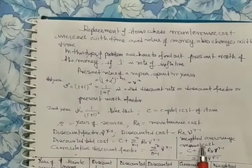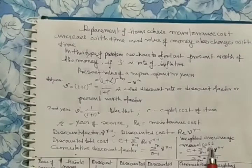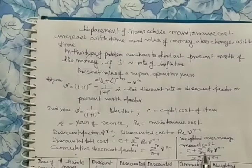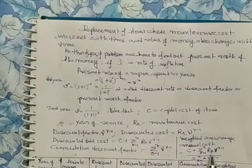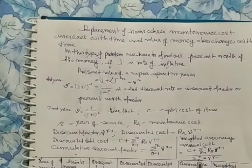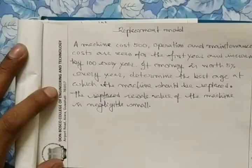We have to find out the weighted average annual cost. It is C plus summation from r=1 to n of (R_r × v^(r-1)), divided by the summation from r=1 to n of v^(r-1). The cumulative discount factor is the summation of v^(r-1) from r=1 to n.